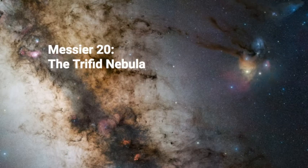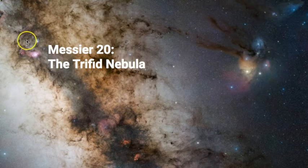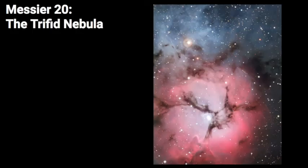This next nebula is called the Trifid Nebula, also known as Messier 20, and it is very interesting because it is a rare combination of all three types of diffuse nebulae. When we look at this picture, we're looking toward the center of the Milky Way through the constellation Sagittarius. Zooming in to a specific area, the Trifid Nebula shows each type of diffuse nebula that exists.